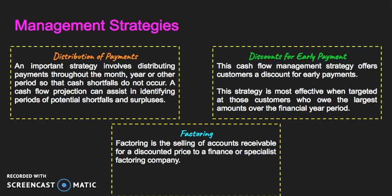And finally, they can use factoring. Factoring is the selling of accounts receivable for a discounted price to a finance or specialist factoring company. So let's say you offer a company $100,000 in 30 days instead of 60 days with 10% off, and they still can't manage to do that — the next option may be factoring. You sell that $100,000 bill to a factoring or finance company. They'll give you maybe $80,000 or $90,000, keeping a little bit themselves — that's their business. And then they will sort it out with the original company that owed you money, so you get your money straight away and the factoring company chases up that bill later.